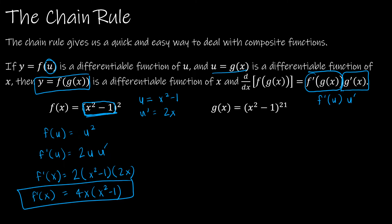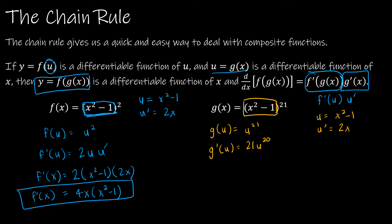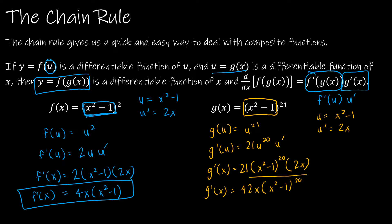That's the same solution as before when we foiled it out. For g(x) = (x²-1)²¹, again u = x²-1 and u' = 2x. Then g(u) = u²¹, so the derivative is 21u²⁰ times u'. Therefore g'(x) = 21(x²-1)²⁰ · 2x = 42x(x²-1)²⁰. We found that derivative quickly using the chain rule.